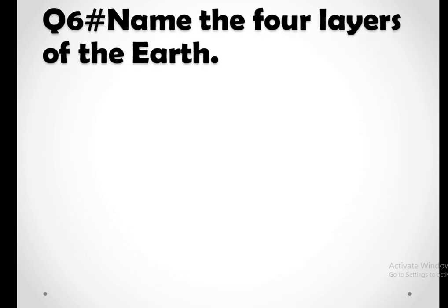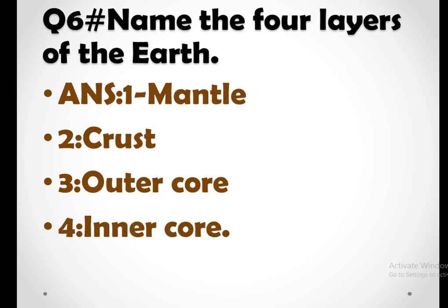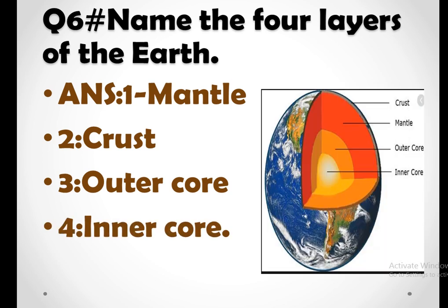Question number six is name the four layers of the earth and we have read this in our lecture. So there are four layers of the earth and the first one is mantle, the second one is crust, third one is outer core and the fourth one is inner core. Here you can see the picture of the layers of the earth. How many layers? Four layers of the earth.